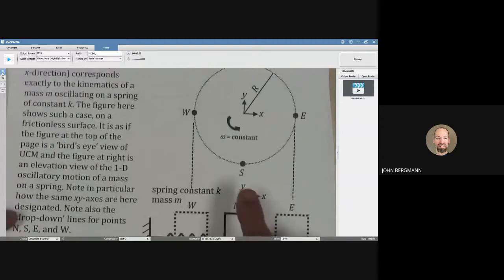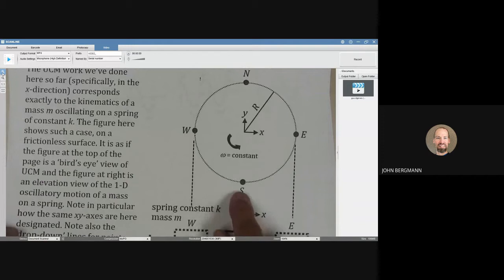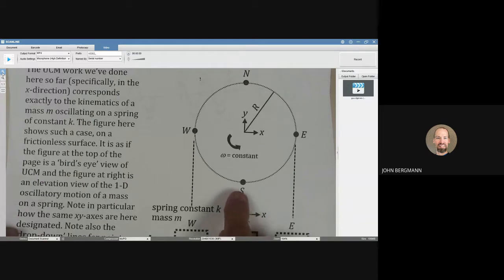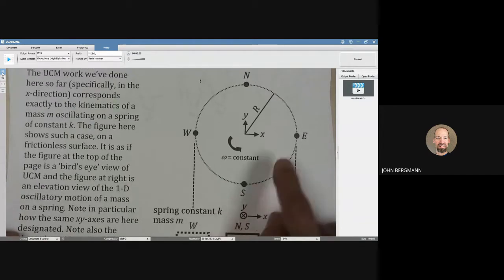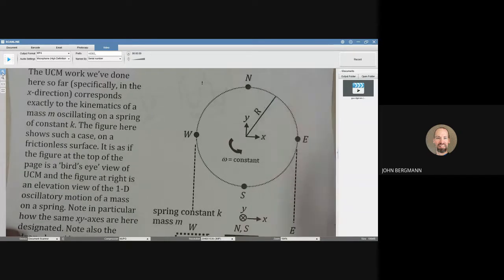When this circular motion thing is happening, when we're at the south point, we're scooting to the right in the x direction. And when we're at the north point, we're scooting to the left in the x direction.